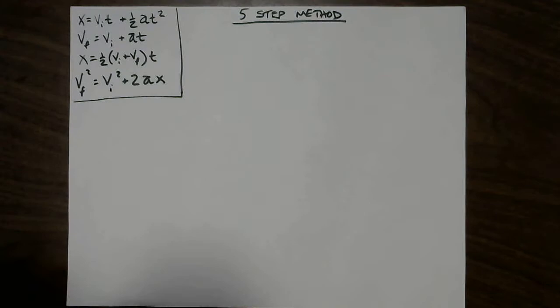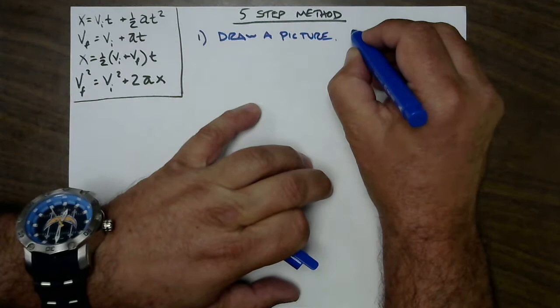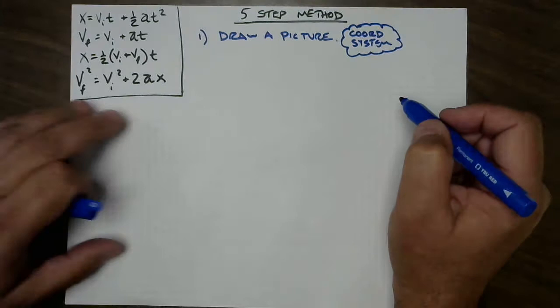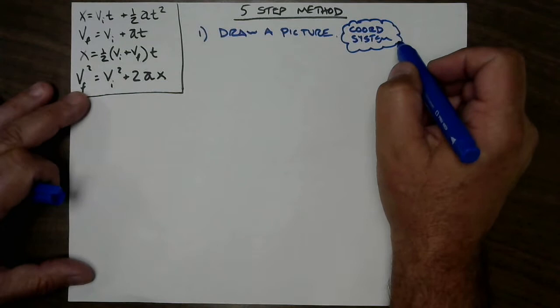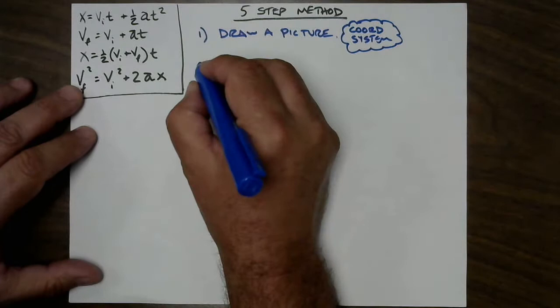Your picture needs to indicate your coordinate system. Show yourself where the origin is and which direction is positive. That prevents mistakes where you put a negative value in as positive.